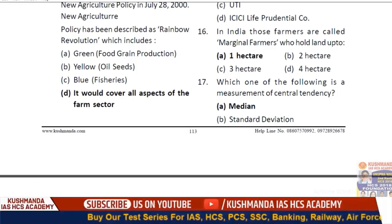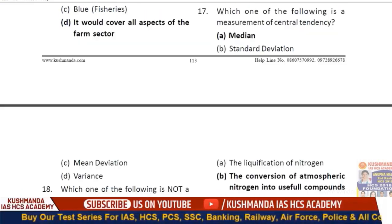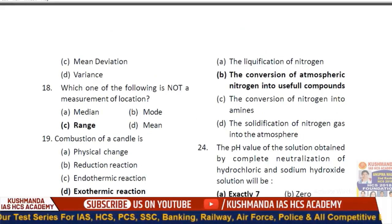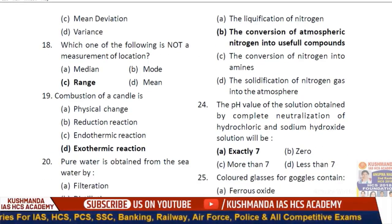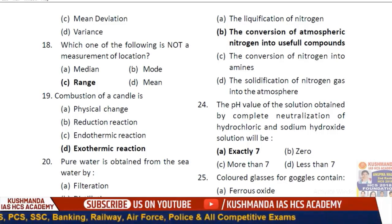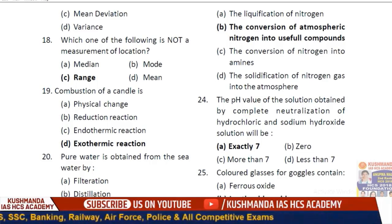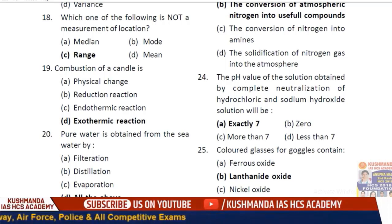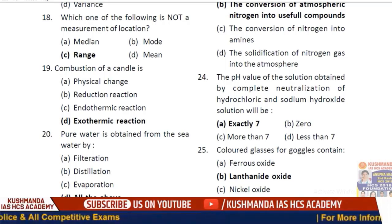Question 17: Which of the following is a measurement of central tendency? Option A — median. Question 18: Which of the following is not a measurement of location? Option C — range. These two questions are from statistics.